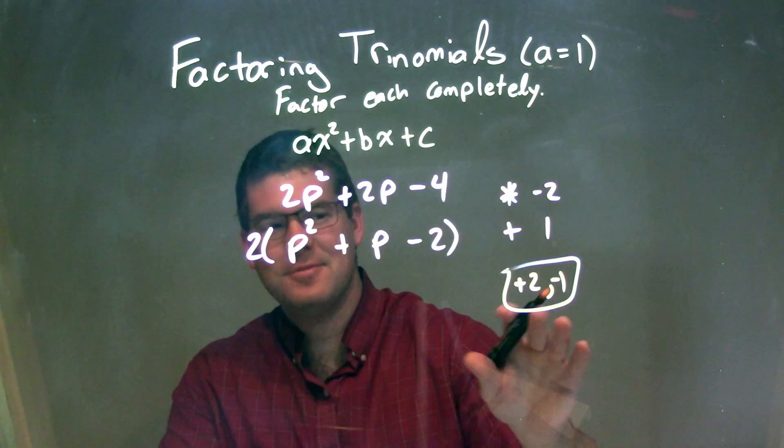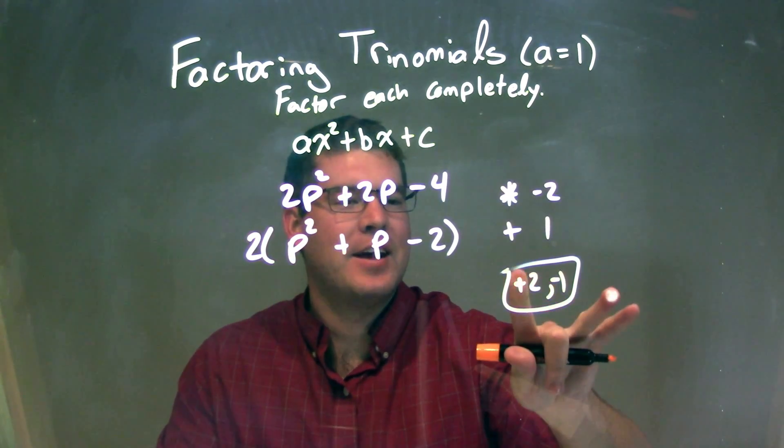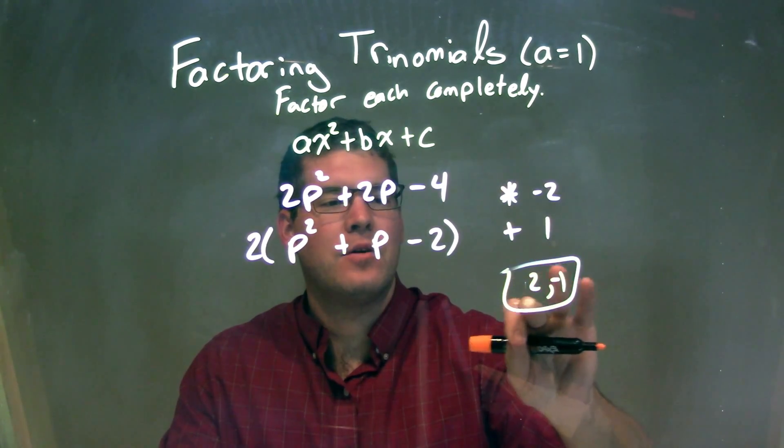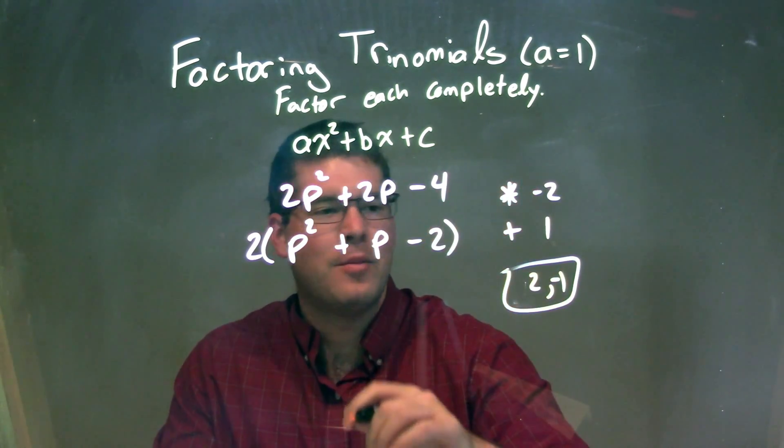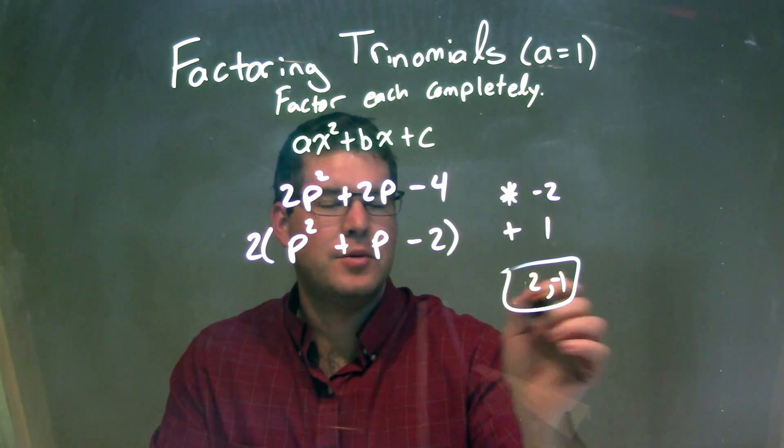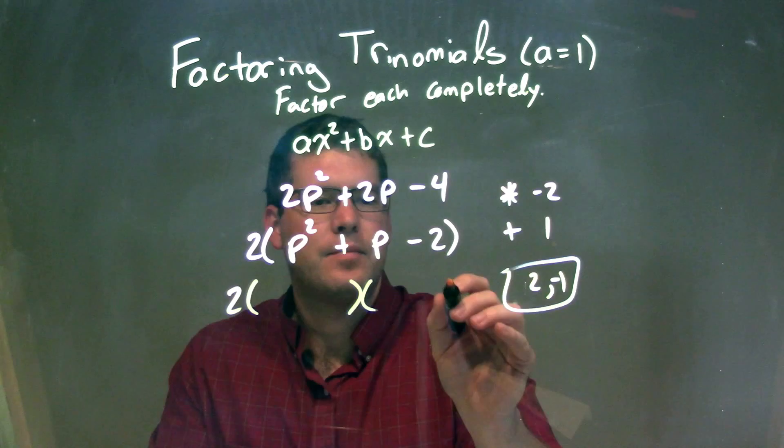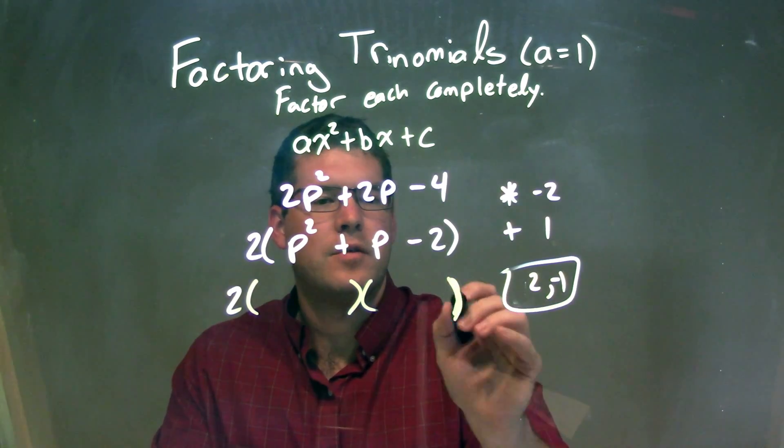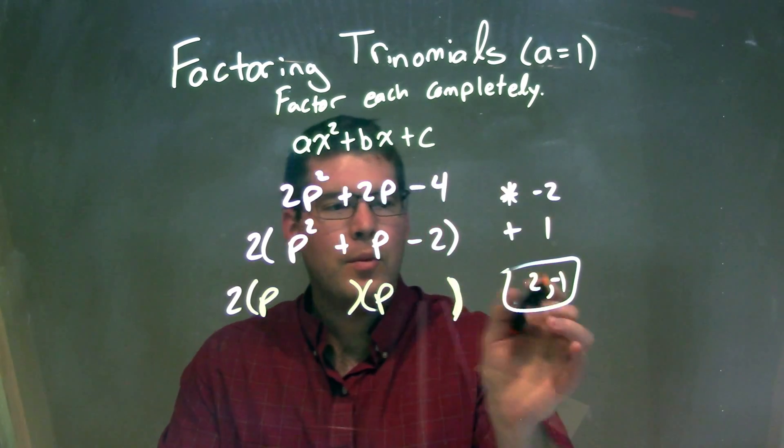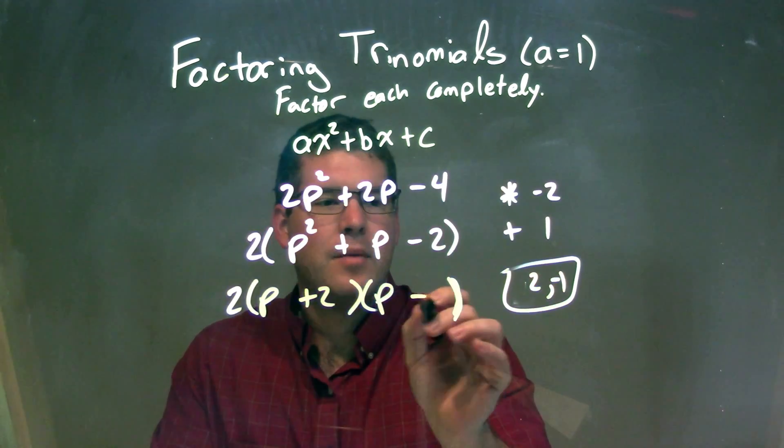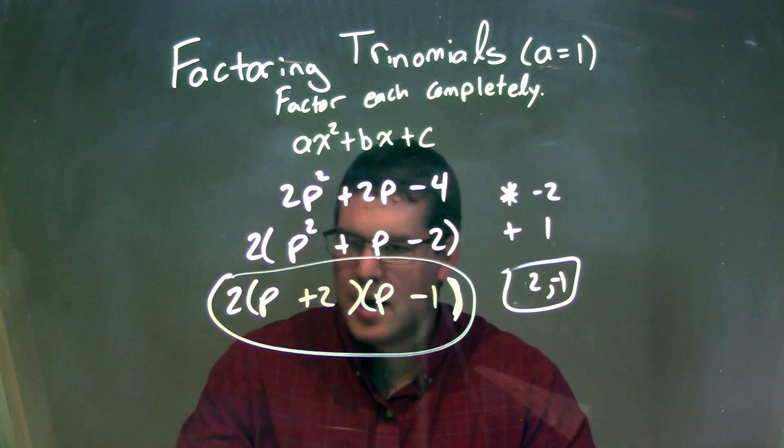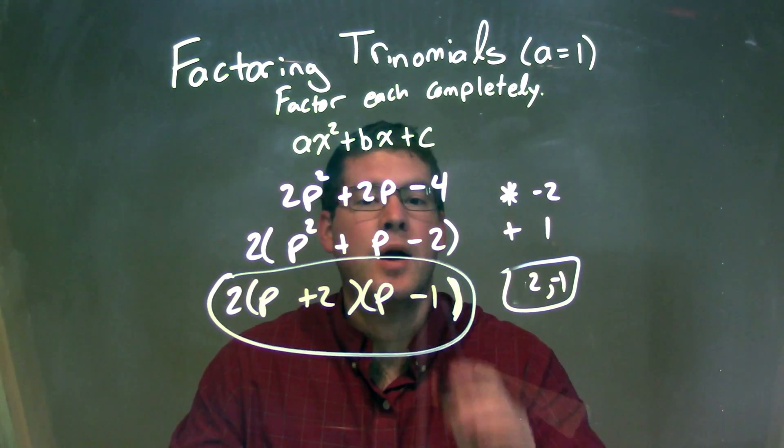So now we have two numbers, 2 and negative 1. We can break this apart into parentheses with p for both of them. We'll put the 2 there, so p plus 2 and p minus 1. And there we have our final factored answer: 2 times p plus 2 times p minus 1.